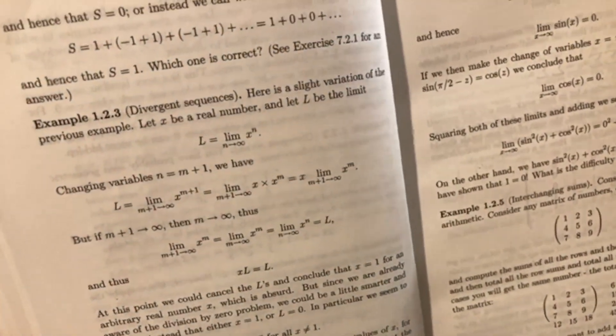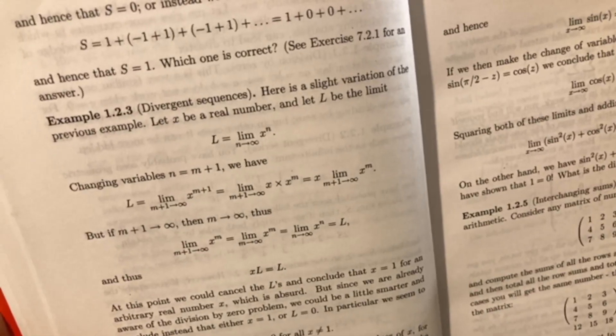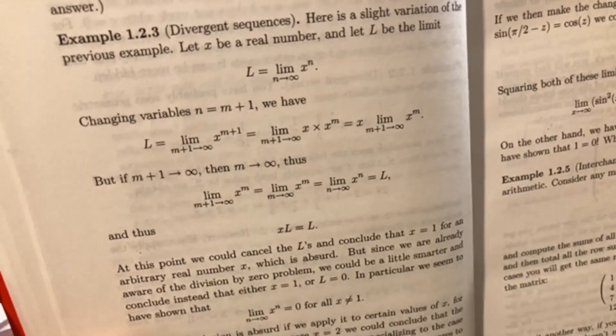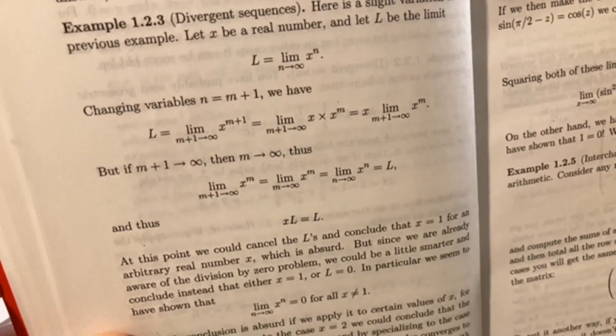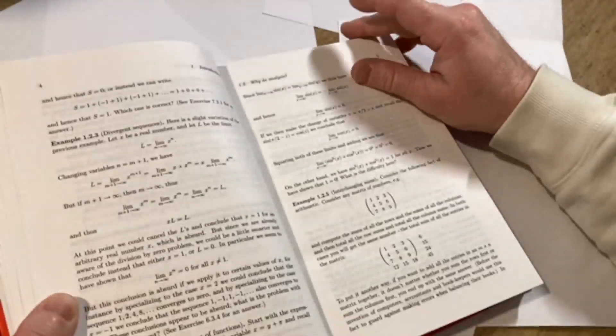Divergent sequences. Here is a slight variation of the previous example. Let X be a real number and let capital L be the limit. That's just very clear. Changing variables N equals N plus one, we have... Very well explained. Just crystal clear.